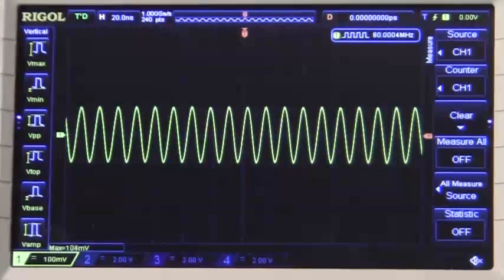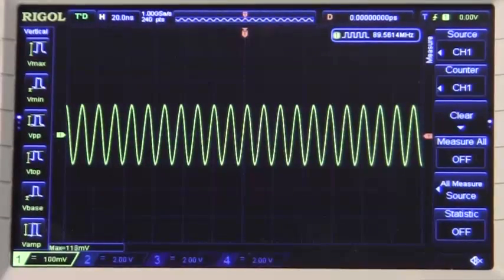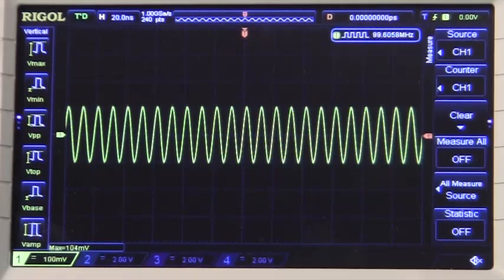We are at 104 mV at 90 MHz, then 112 mV. So it's spiking a little bit around there. At 100 MHz it's 104 mV. So now we've reached 100 MHz, which should be the bandwidth limit for this oscilloscope.